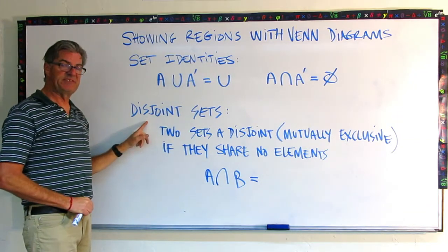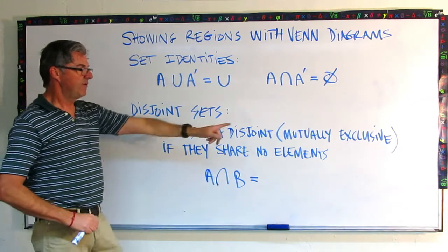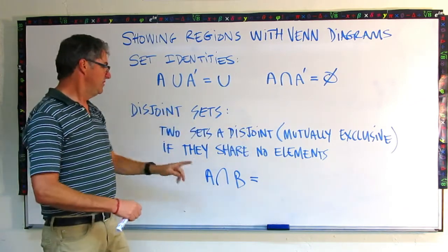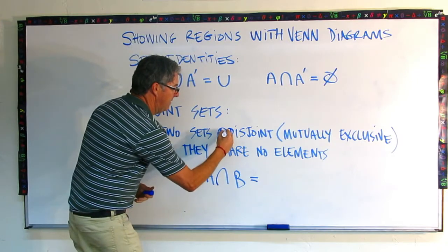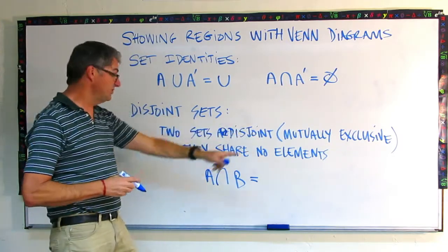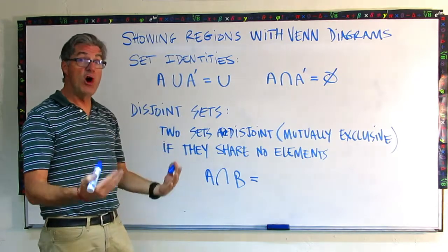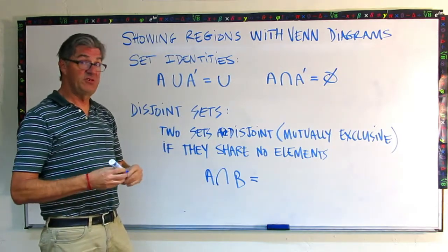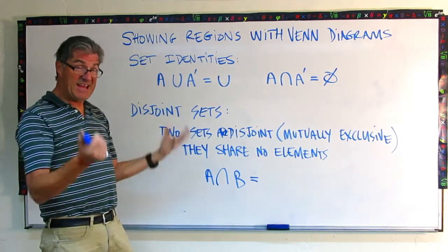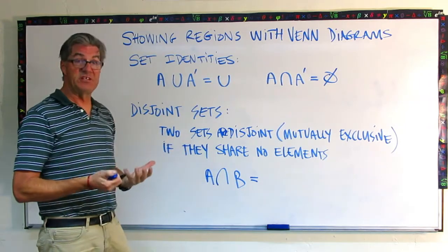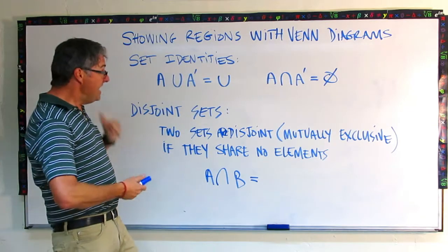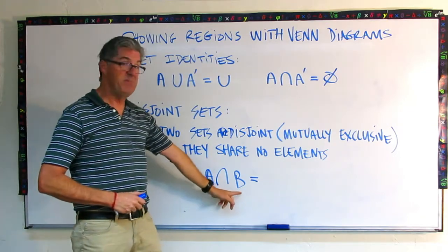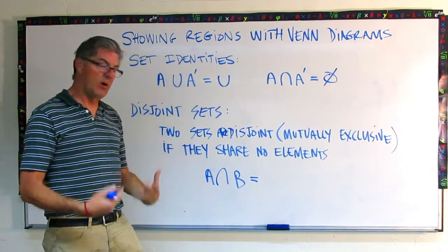Disjoint sets. This is a fancy word for mutually exclusive. So two sets are disjoint, which is mutually exclusive, if they share no elements. So if two sets don't share any elements, then they're considered disjoint or mutually exclusive.